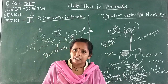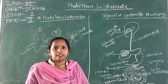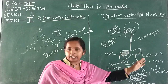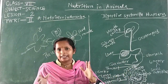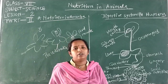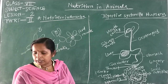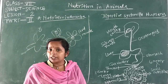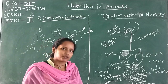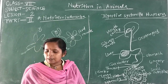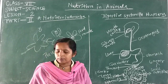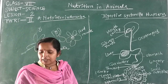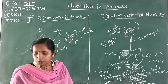Today we will study the digestive system in humans. The five stages of nutrition are also involved in the human digestive system. Our body cells cannot use food in the form it is eaten, so the food is converted from complex form into a simpler form. This process of converting complex food substances into simpler absorbable form is called digestion.